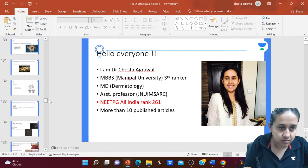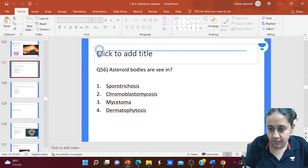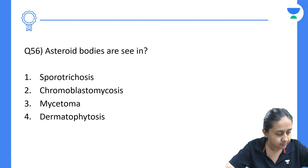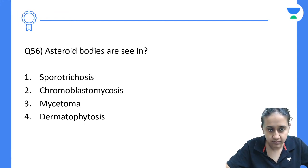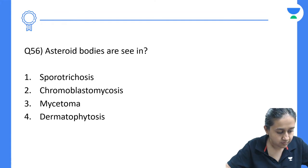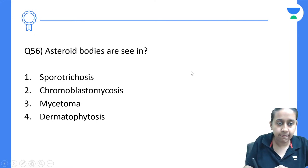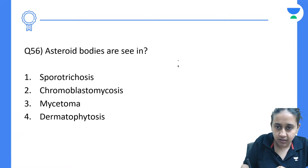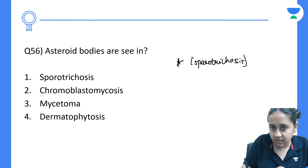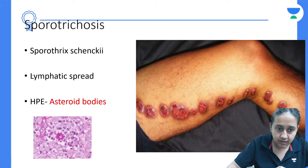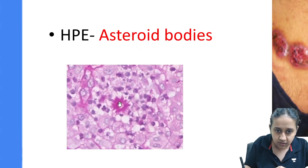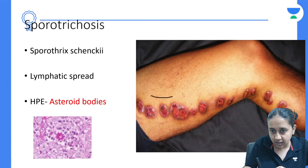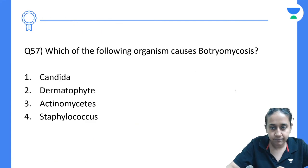There are a lot of questions I wanted my students to know. Asteroid bodies are star-shaped bodies seen in patients of sporotrichosis. Patient of sporotrichosis will have a very classical linear spread of the disease because there is lymphatic involvement.